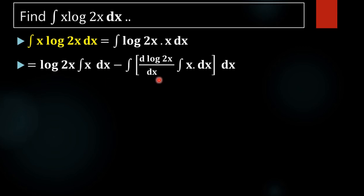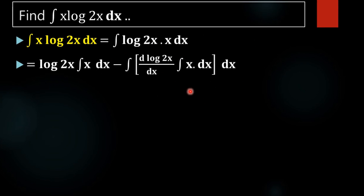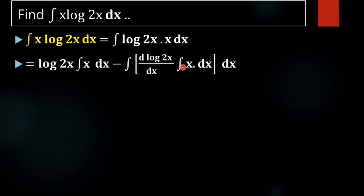The integration by parts formula is: log(2x) into integral of x dx, minus integral of derivative of log(2x) into integral of x dx, whole integral, into dx. That is, u into integral of v, minus derivative of u into integral of v, whole integral.